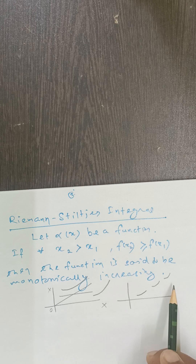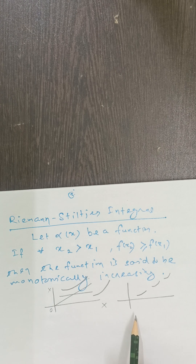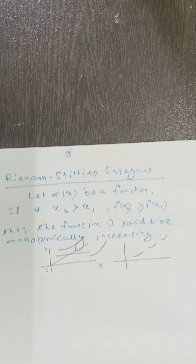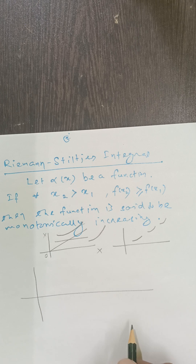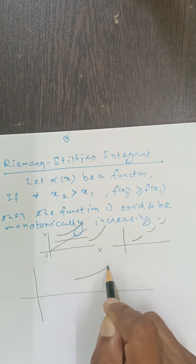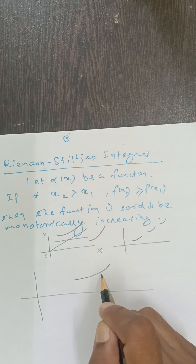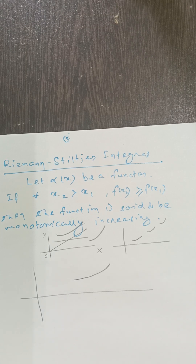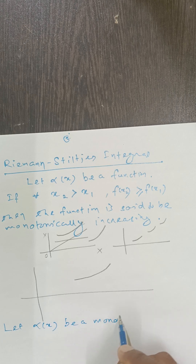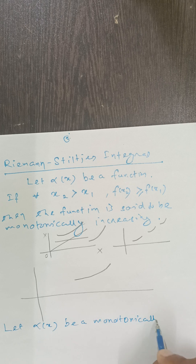That means for all x2 greater than x1, f(x2) is greater than or equal to f(x1). Now let alpha(x) be a monotonically increasing function. This will be the graph of the function alpha(x).